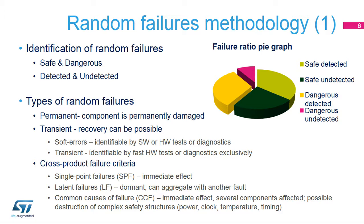For quantification purposes, safety standards recognize a safe failure fraction and diagnostic coverage. The safe failure fraction, or SFF, is the ratio of the rate of safe failures, including the rate of detected dangerous failures, to the total failure rate — safe failures as well as detected and undetected dangerous failures. The diagnostic coverage, or DC, is the ratio of the probability of detected dangerous failures to the probability of all the dangerous failures.